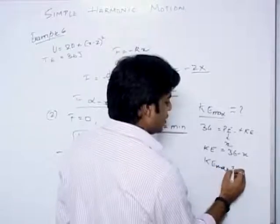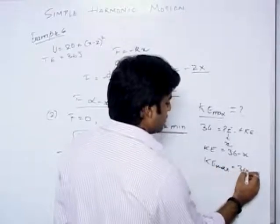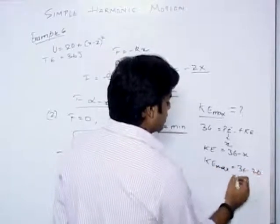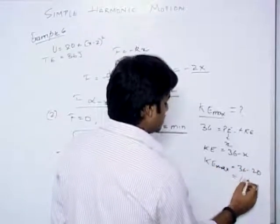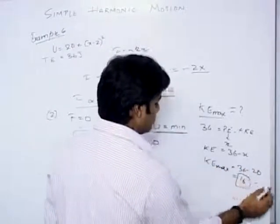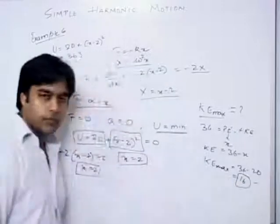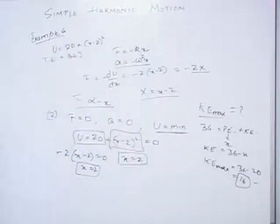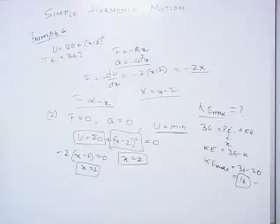The maximum kinetic energy equals total energy minus minimum potential energy, which is 36 minus 20 equals 16 joules. So the maximum kinetic energy of the particle is 16 joules.